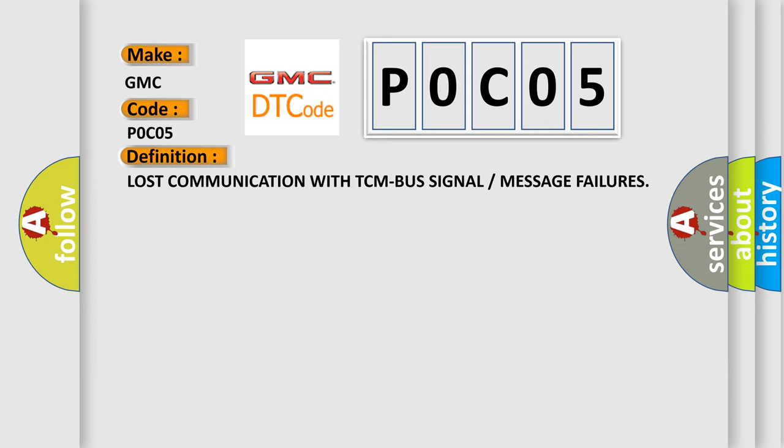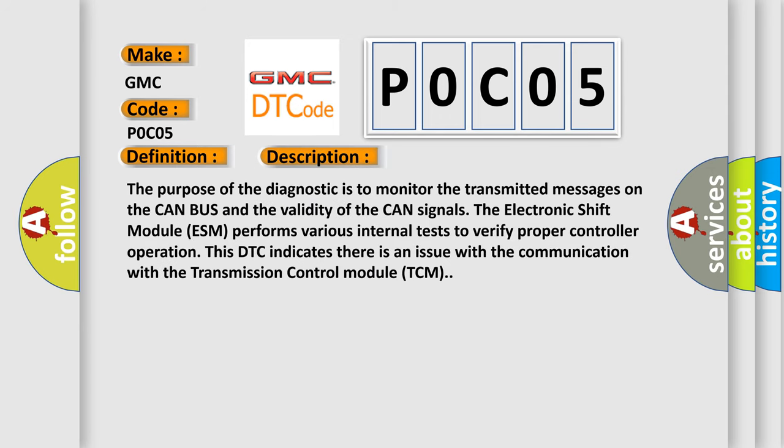And now this is a short description of this DTC code. The purpose of the diagnostic is to monitor the transmitted messages on the CAN bus and the validity of the CAN signals. The electronic shift module ESM performs various internal tests to verify proper controller operation.